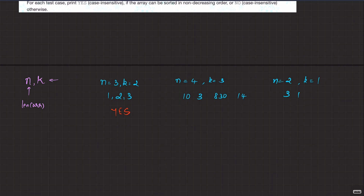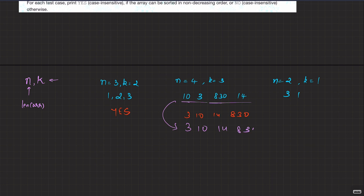Then n equals 4, k equals 3. The sorted version will be 3, 10, 14, 8, 30. Can we do it? Since the maximum size of the sub-array that I can reverse at a time is 3, maybe I can just reverse this part — so 3, 10, and then reverse the remaining part: 14, 8, 30. This is also yes, this can also be sorted.